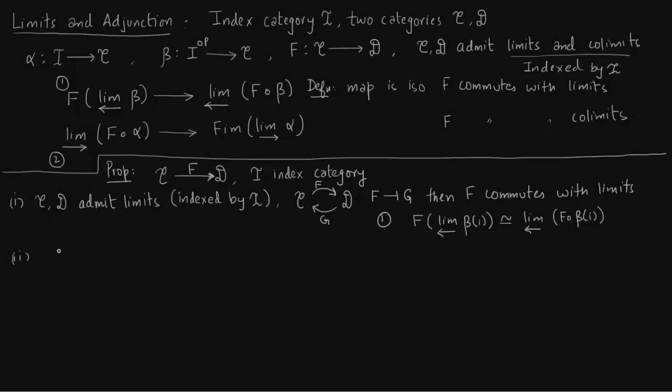The second part follows exactly in the same way. Categories C and D admit colimits indexed by I. Functor F admits a left adjoint functor G. You have a functor F and G in the opposite direction. Then F commutes with colimits.